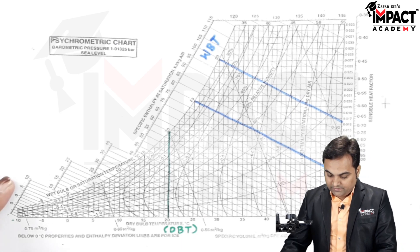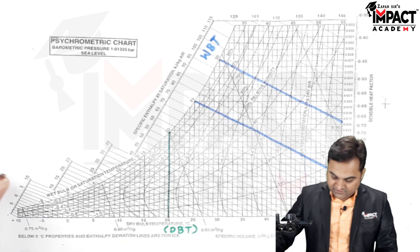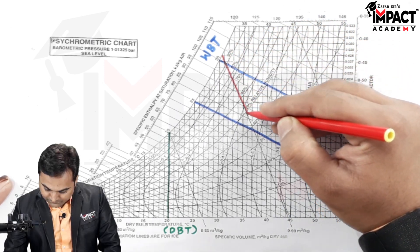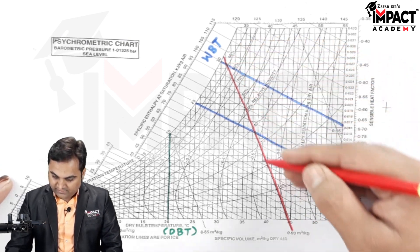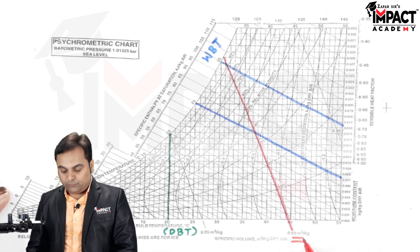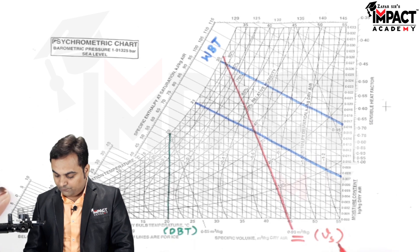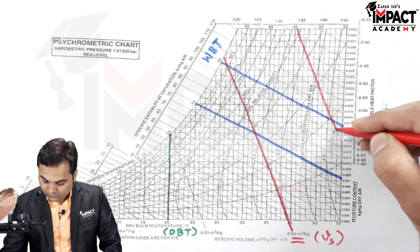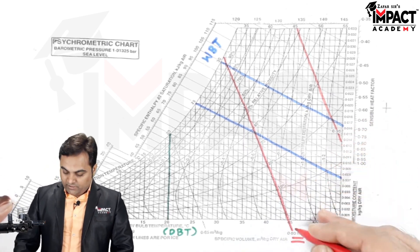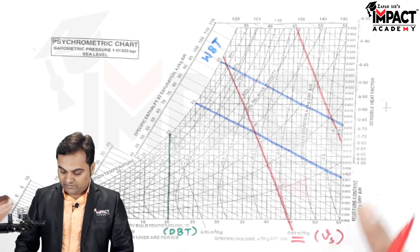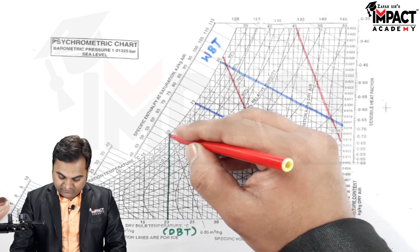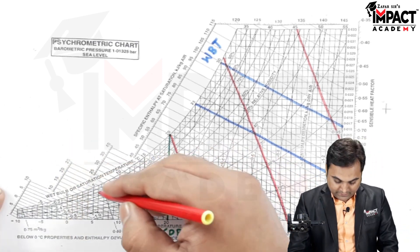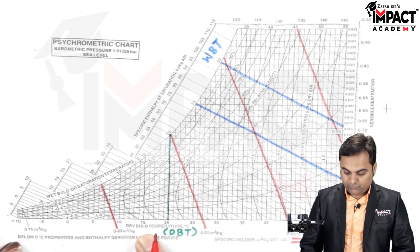The specific volume is also indicated by inclined lines. For example, one inclined line drawn in red shows a specific volume of 0.90 cubic meters per kg. Any point on that line gives the same specific volume value. Similarly, we have lines for 0.95, 0.85, and 0.80 cubic meters per kg.